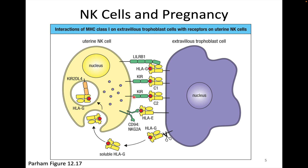The cells of the extravillous trophoblast encode a large number of different MHC class 1-like molecules and MHC class 1 molecules that can all serve to bind to NK inhibitory receptors and keep NK cells in the area turned off. This NK inhibition from these many inhibitory receptors on the extravillous trophoblast is one of many immunologic specializations that allow pregnancy to go forward.